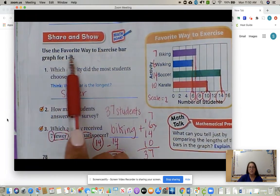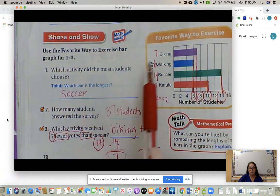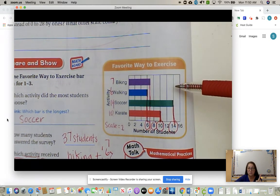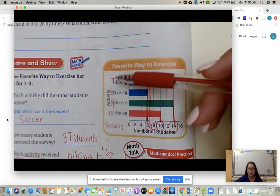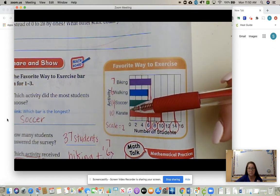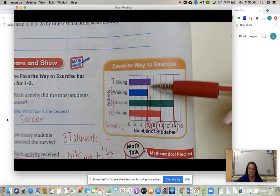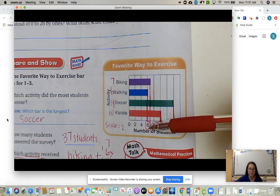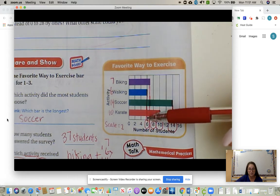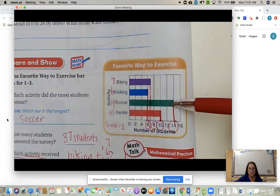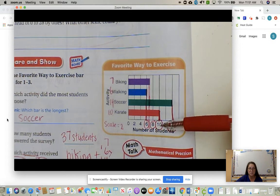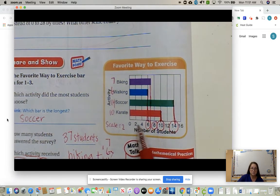Page 78, use the favorite way to exercise bar graph from numbers one to three. Now that we're getting into actual problems, just like the tally chart, just like the picture graph, I want you to label the answers next to the categories because then the questions will be so much easier. We looked at biking, we went straight down. Biking's in between six and eight. What's in between six and eight? Seven. So biking is seven. Walking, go to end of walking, go straight down. We have six. Soccer, go all the way over, go straight down. We have 14. And karate, go all the way over, go straight down. We have 10. And our scale is going by twos.